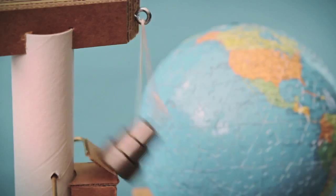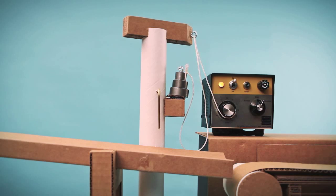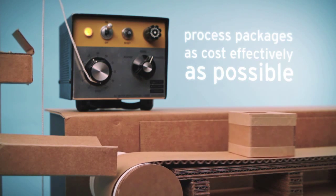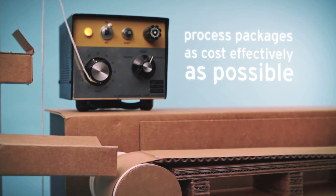These widgets are headed for new owners all over the world. So you've set up business rules that are triggered by relevant laws and restrictions at each recipient's delivery address. You've also configured BRMS to process packages as cost-effectively as possible.